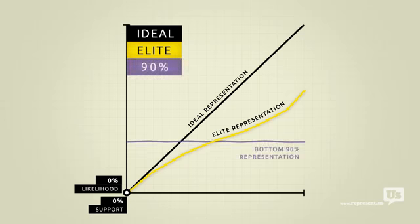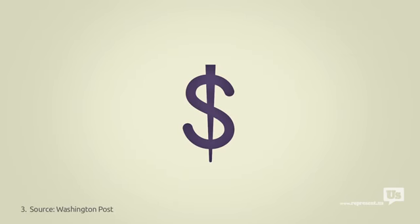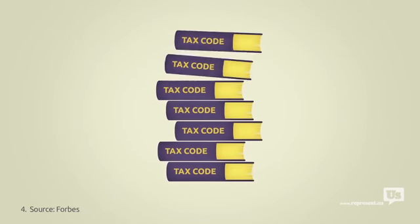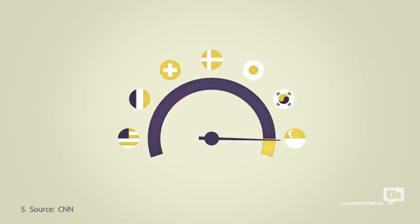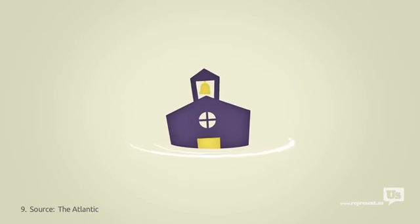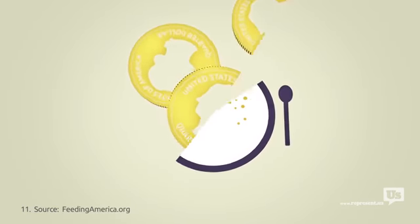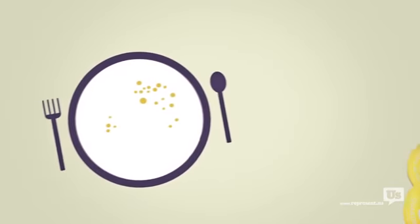They get what they want, and guess who ends up paying for it? We pay for it with the most expensive healthcare in the world. We pay for it with a tax code that's a complete mess. We pay for it with internet that's slower and more expensive, with wasteful spending, a floundering education system, a catastrophic drug war, and one in five American children born into poverty. Almost every major issue we face as a nation can be traced back to this graph.